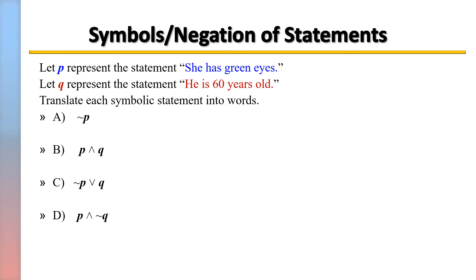Let P represent the statement 'She has green eyes' and Q represent the statement 'He is 60 years old.' So translate each symbolic statement into words.